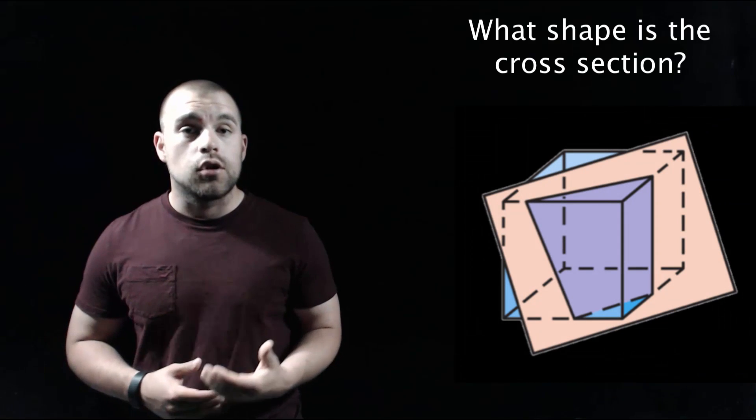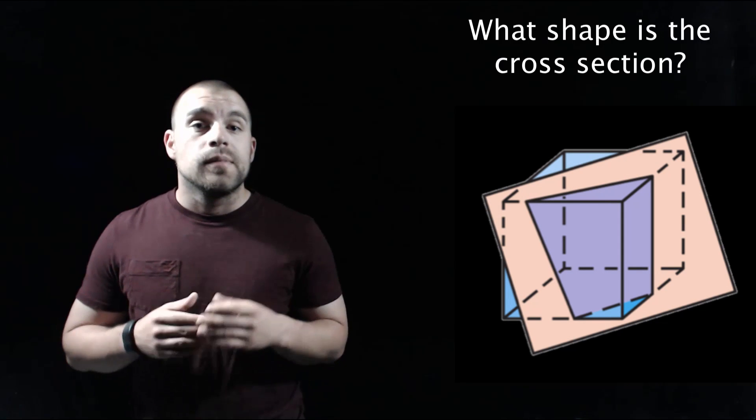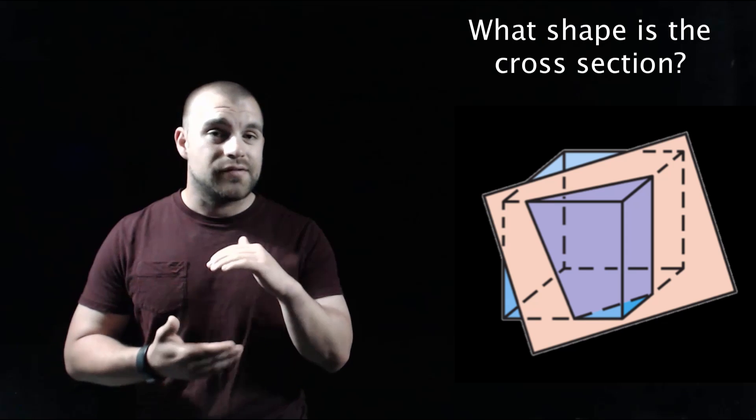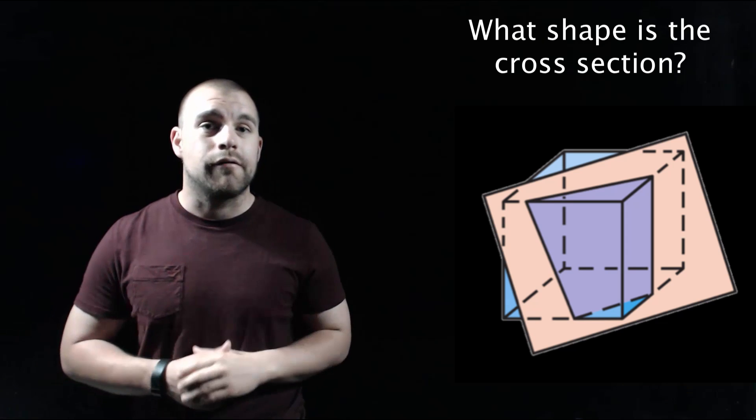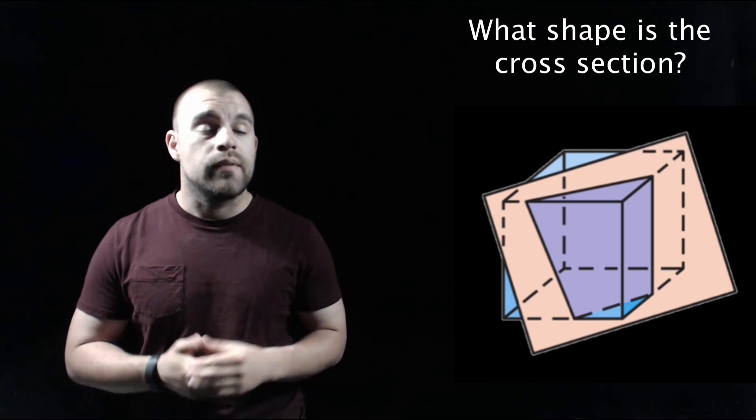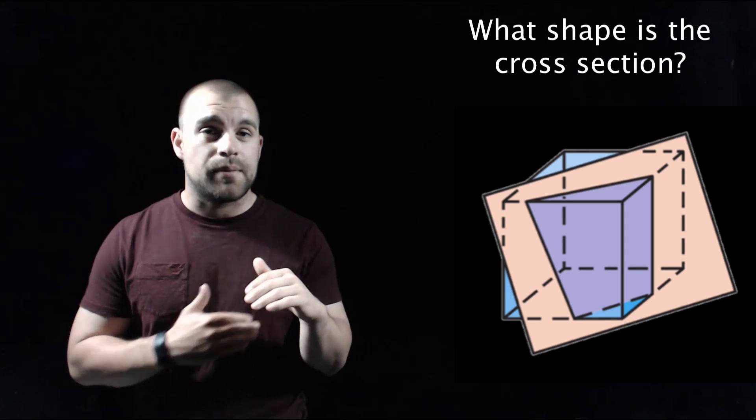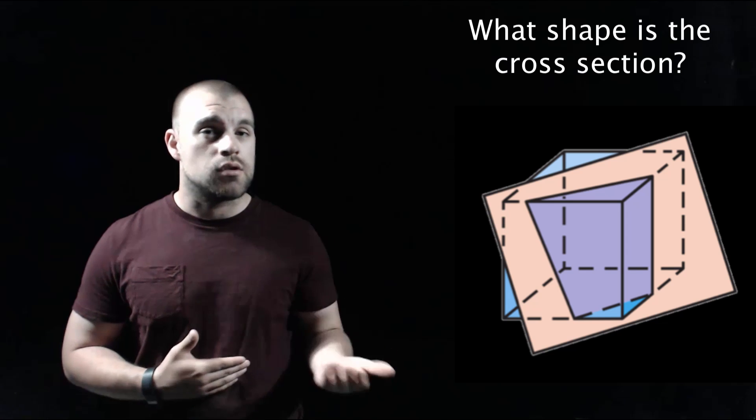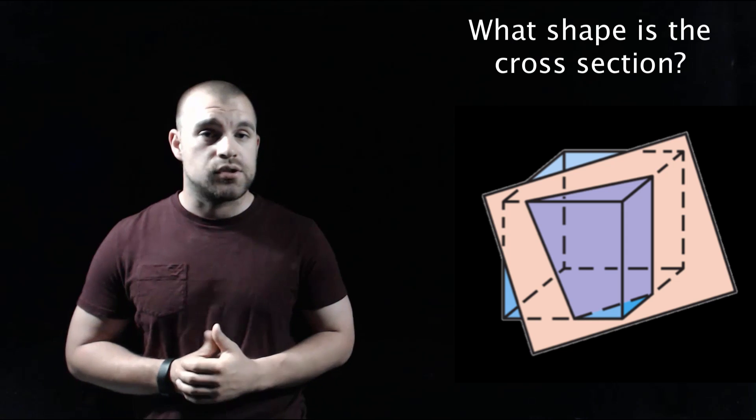For our third example, still looking at the cube, the plane isn't parallel to any bases and it's kind of slanted. The top is further back than the front. If we look at the shape that's created, we've got a pair of parallel lines across the top and across the bottom and our other two sides are not parallel. So that makes this cross section a trapezoid.